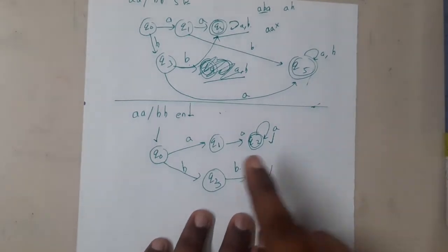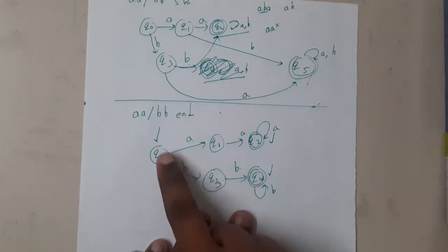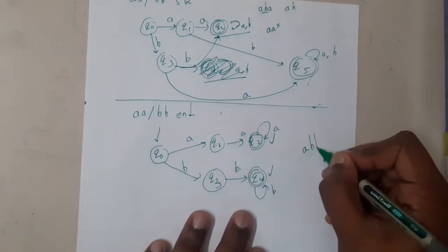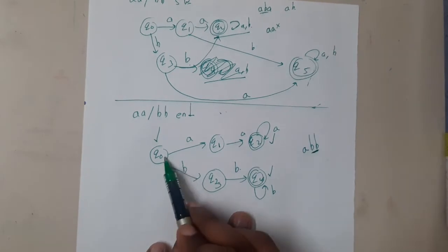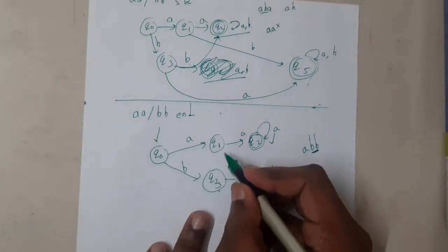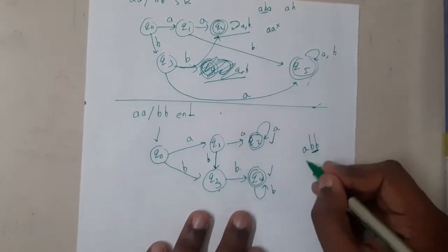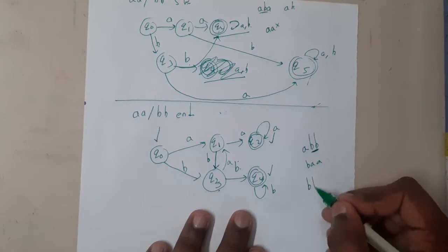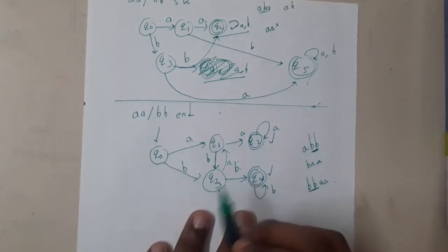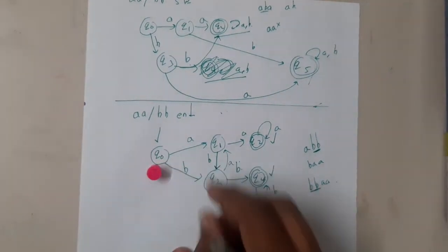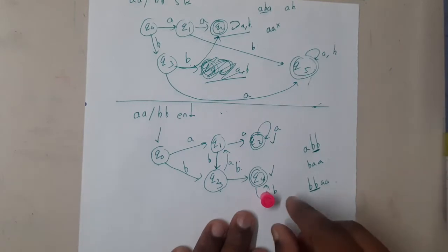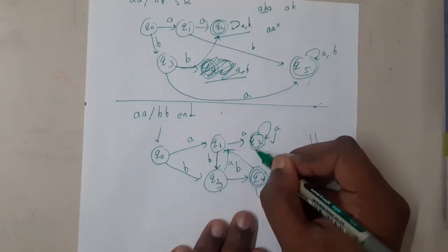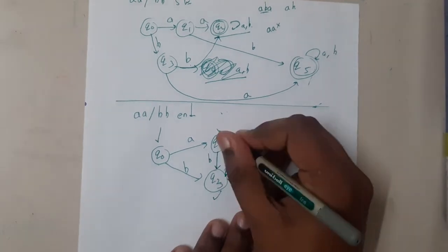Now we are left with transitions between the two paths. If we started in the 'aa' path and suddenly get 'b', we need to shift to the lower path to accept 'bb'. So if we get 'b' we come down, and if we get 'ba' in the 'bb' path we shift up. For 'bbaa': after 'bb' we're here; getting a single 'a' we can come here; getting 'b' we come back. Now everything is covered — this is the diagram for ending with 'aa' or 'bb'.